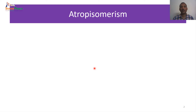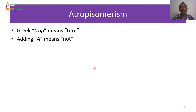What is atropisomerism? The Greek word 'trop' means turn, that is, rotate. Adding 'a' means 'not' — similar to how adding 'un' to 'happy' gives 'unhappy.' So 'atrop' means no turn, i.e., there is no rotation.